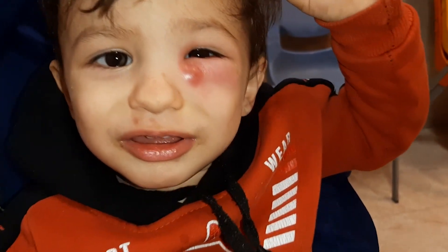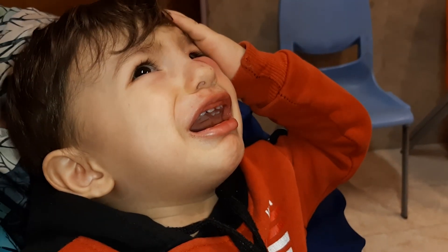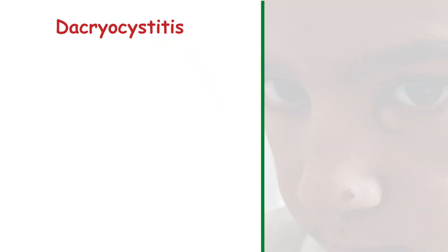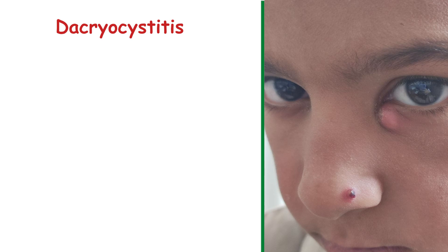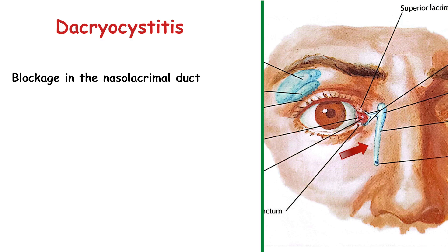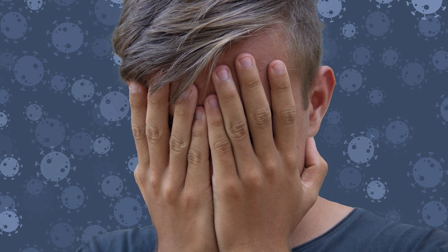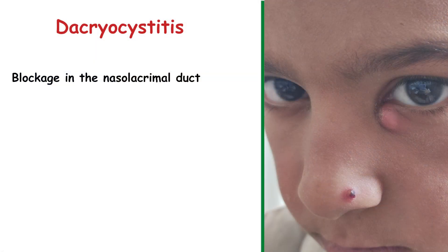Dacryocystitis is the medical term for an infection or inflammation of the lacrimal sac, which is part of the tear drainage system located between the inner corner of the eye and the nasal cavity. The condition typically results from a blockage in the nasolacrimal duct, which prevents tears from draining normally. This obstruction allows bacteria to accumulate, leading to infection. This process can be both acute and chronic.